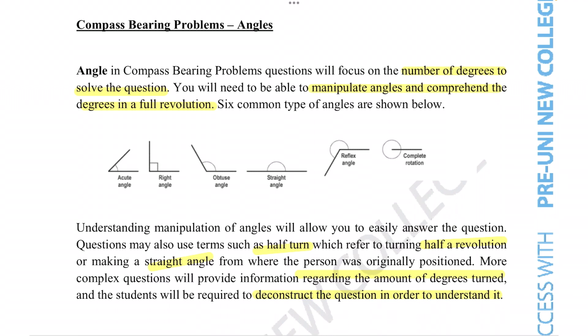Angle-related compass bearing questions will typically involve the needle of a compass turning around. Not necessarily a compass, but using the cardinal directions, which are north, east, south, and west, to figure out how much something or someone has turned around.